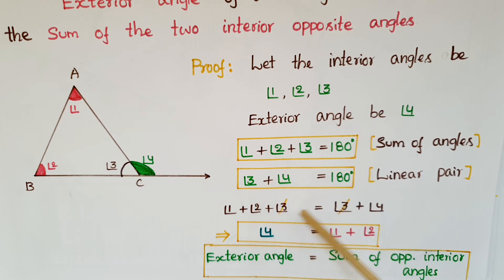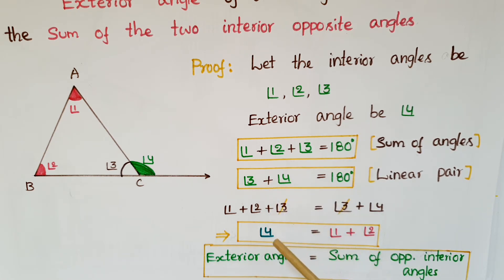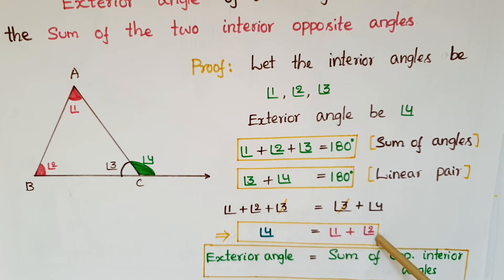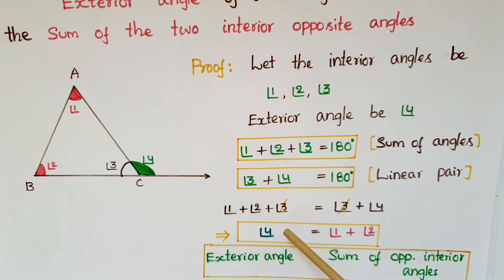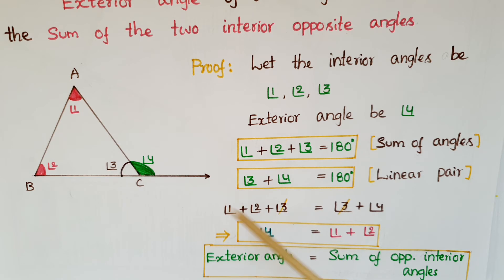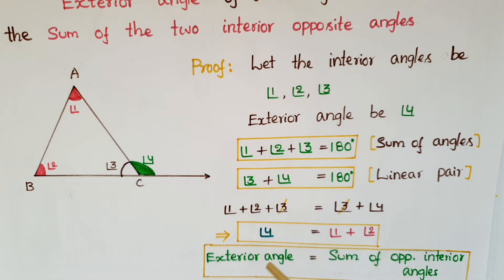Cancelling angle 3 from either side, we get angle 4 is equal to angle 1 plus angle 2. Here angle 4 is the exterior angle and angle 1 and angle 2 are the opposite interior angles. So we can say that the exterior angle is equal to the sum of the opposite interior angles of a triangle.